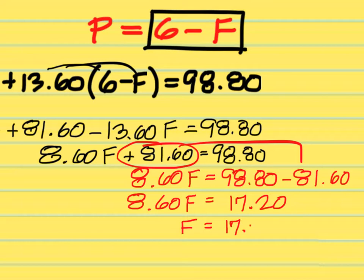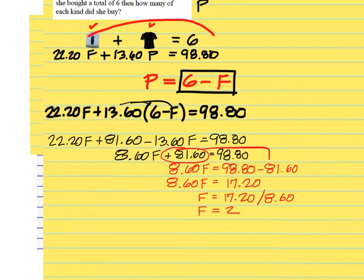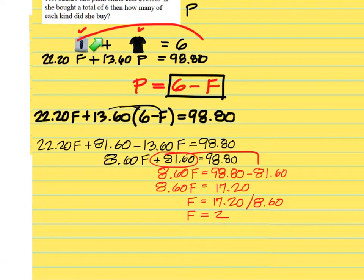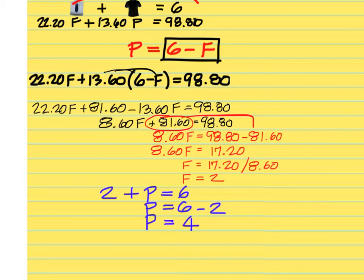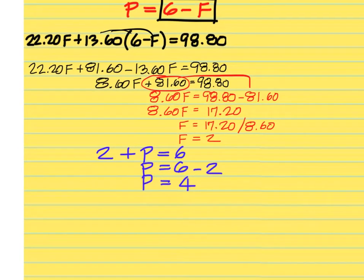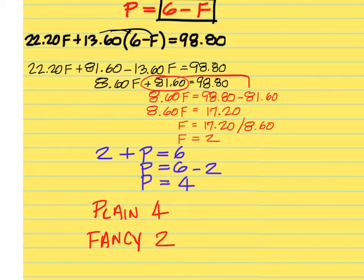Move $81.60 over to the right-hand side, making it minus $81.60. So $8.60F equals $98.80 minus $81.60, which is $17.20. Divide: F equals $17.20 divided by $8.60, which equals 2. So she bought 2 fancy shirts. From the first equation, F plus P equals 6, and since F is 2, P equals 6 minus 2 equals 4 plain shirts.